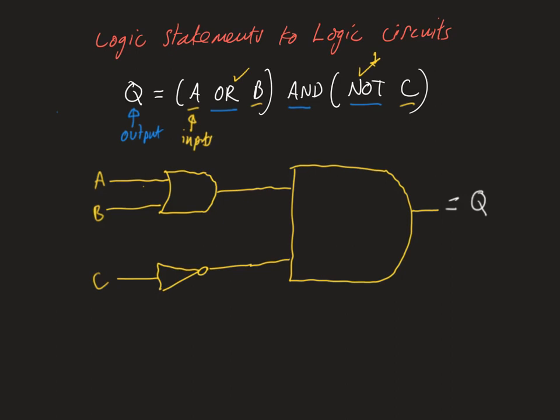So then we could go ahead and draw our truth table from that. So we put our inputs in: A, B, C. And we put our output, which is Q. Now I'm not going to draw the whole truth table here because we could be here for a very long time.